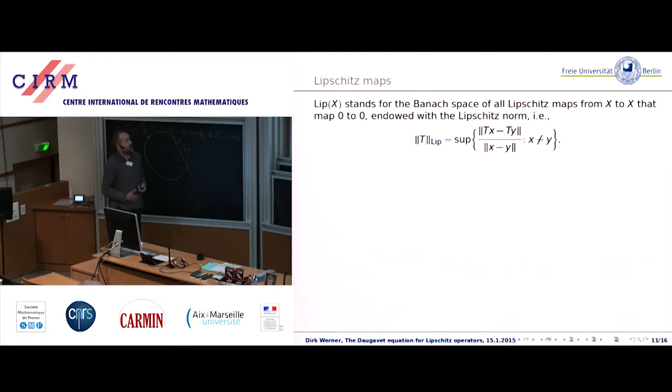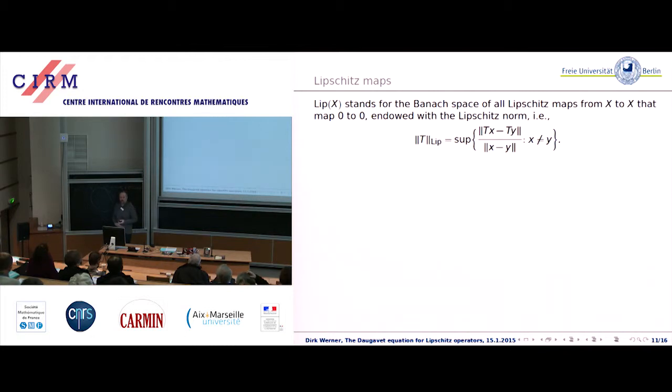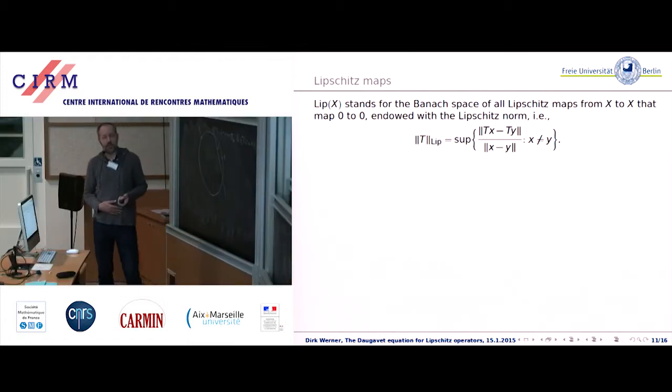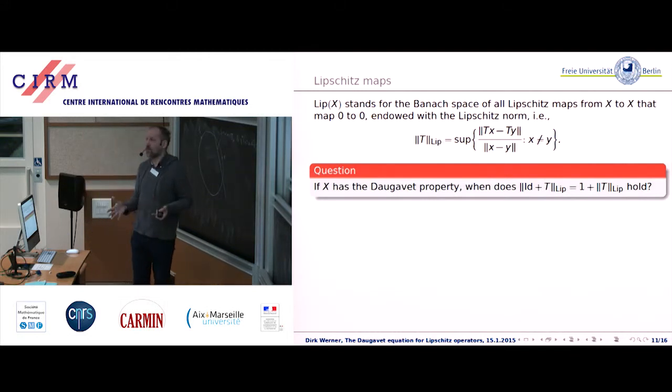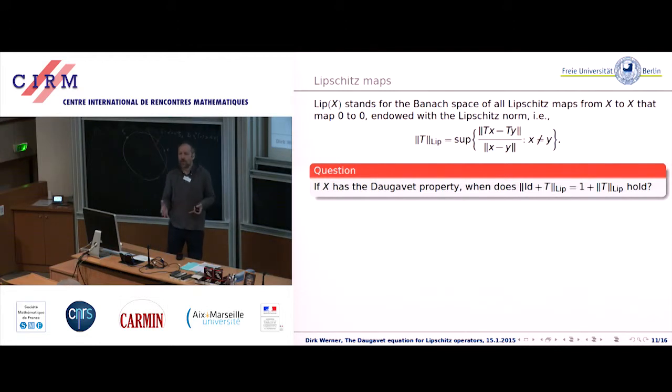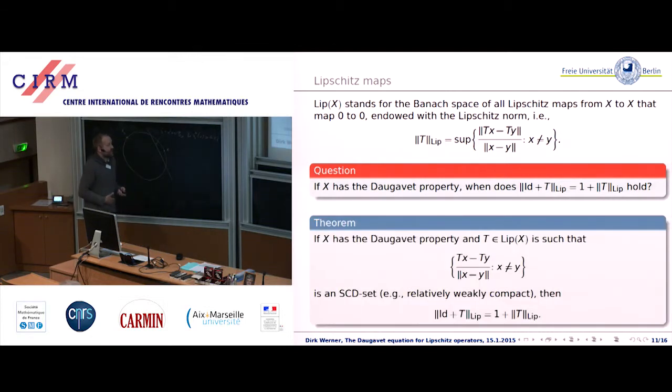We have results on the first type of generalizations I'm not going to talk about today, but for the second type I will speak about the results that we have obtained. First of all the Lipschitz constant will only be a semi-norm on the space of all Lipschitz operators unless you make sure that there is some condition making it definite. The condition here is that we consider only those operators that take the distinguished point 0 to 0 and then it's a norm. This is the space of operators that we wish to consider and this is the question. We start from a space with the Daugavet property and now you're asking which Lipschitz operators satisfy the Daugavet equation.